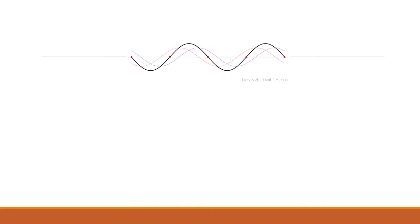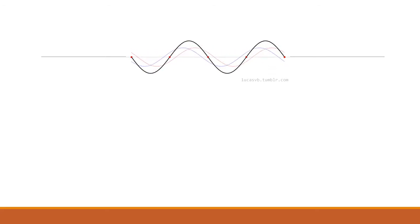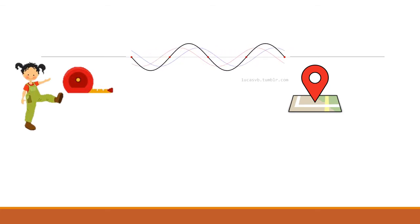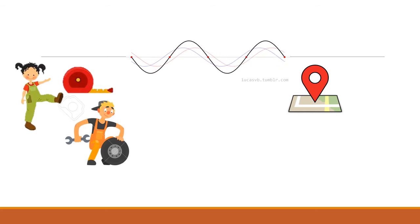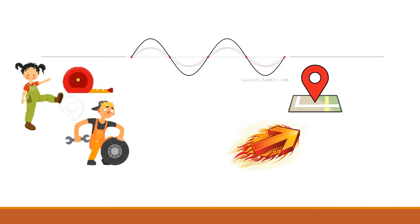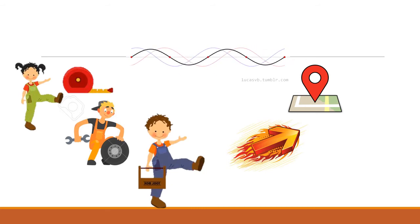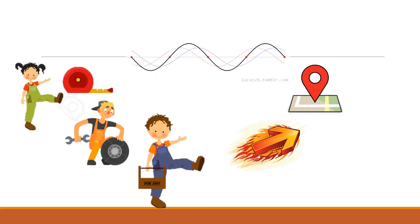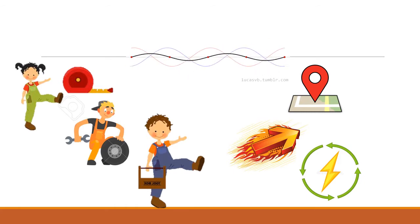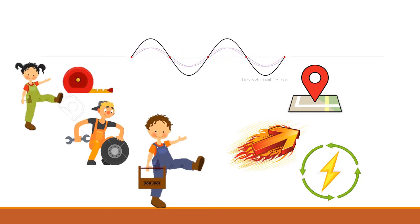When we measure a wave function with a particular operator, it will give you the answer for that particular physical property. For example, if you use an operator that measures the position, the wave function will give you the position of the system. If you use an operator that measures the momentum, it will give you the momentum. Similarly, if you use an operator that measures the energy, it will give you the energy. These tools which are operated on the wave function to get the physical values of physical properties are known as operators.